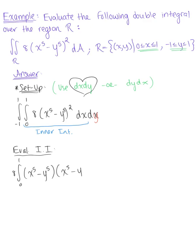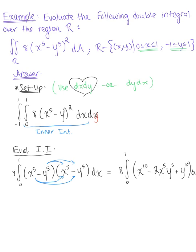So we have x to the 5th minus y to the 5th times x to the 5th minus y to the 5th dx. And we'll need to go ahead and FOIL this out here to find a single polynomial. So this is going to leave us with 8 times the integral from 0 to 1 of x to the 10th minus 2 times x to the 5th y to the 5th plus y to the 10th dx. And we're now ready to integrate.